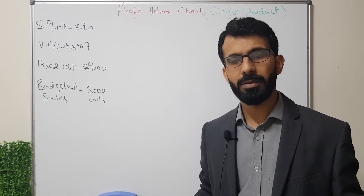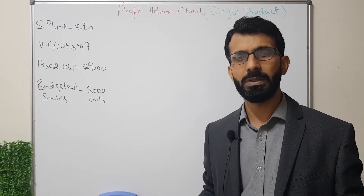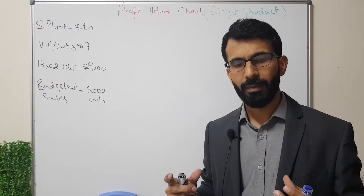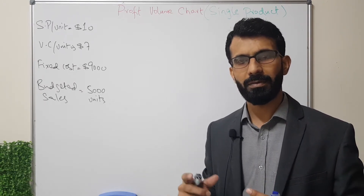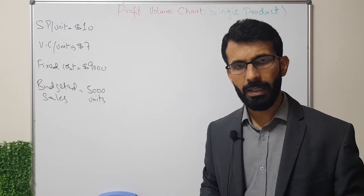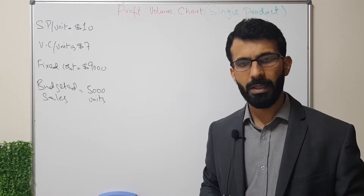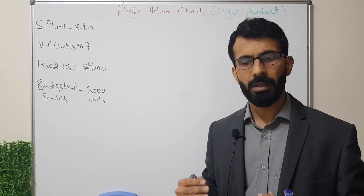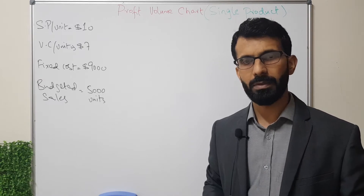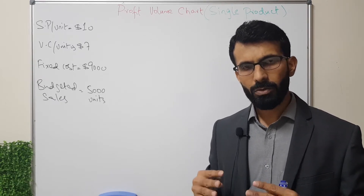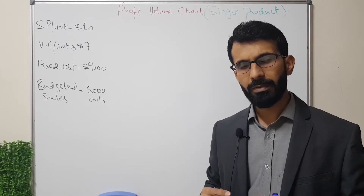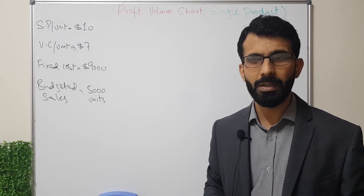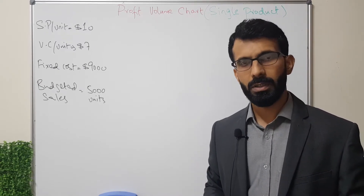As the name indicates, the profit volume chart is used to present what we identified in our calculations: our break-even point, our expected profit, and whether we can achieve the target profit. It is a way of presenting data that is more understandable for the users of that data.